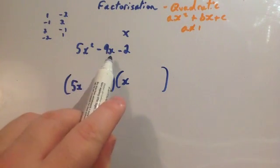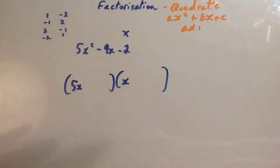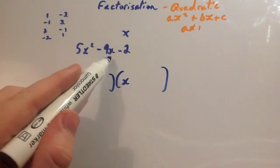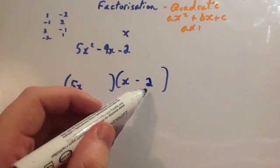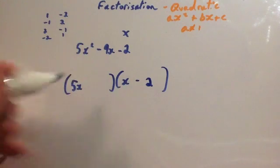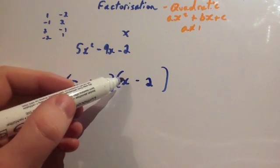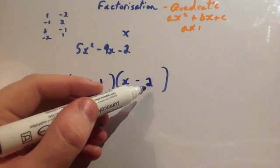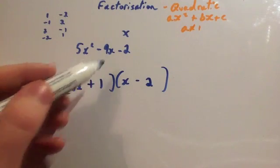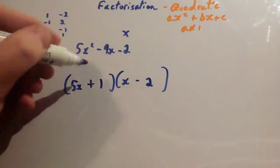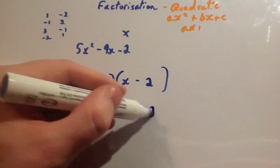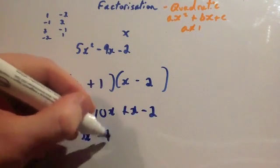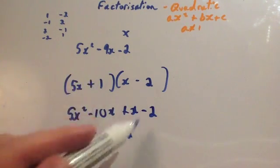We're trying to get minus 9x. I'm going to talk through how to think about it logically. 5x times x is 5x squared. You're looking for minus 9x. If you put minus 2 over here, 5 times minus 2 would be minus 10x — that's getting close to minus 9. Then put plus 1 here. Checking with FOIL: 5x times x is 5x squared, 5x times minus 2 is minus 10x, 1 times x is plus x. Minus 10x plus x gives minus 9x. And 1 times minus 2 is minus 2. So you get 5x squared minus 9x minus 2 — the answer is (5x + 1)(x − 2).